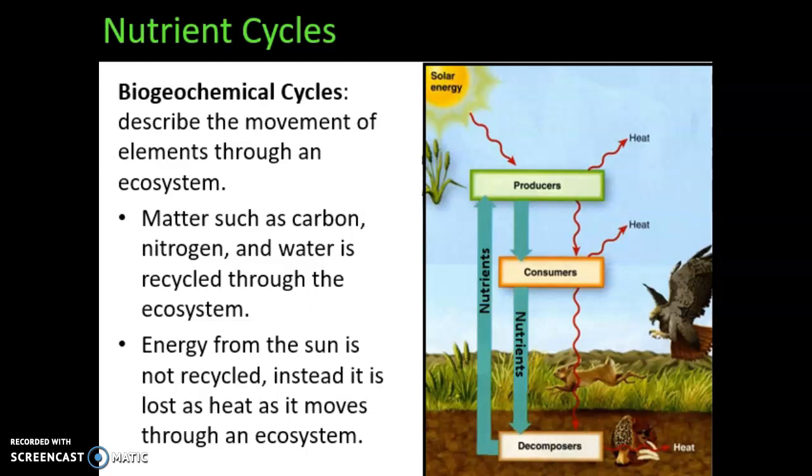Food chains and food webs, which we've been talking about, are all about how energy moves through an ecosystem. And energy doesn't get recycled. Energy always starts off in the sun, is absorbed by plants through photosynthesis, and passed along the food chain all the way to the apex predator — that shark, lion, or tiger. But when they die, that energy is gone. However, nutrients like carbon, nitrogen, and water get recycled over and over again throughout the ecosystem. And their path is what's known as the biogeochemical cycles.